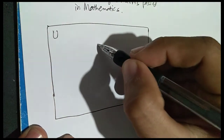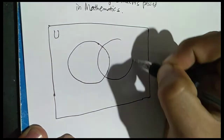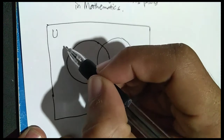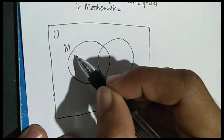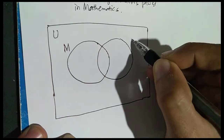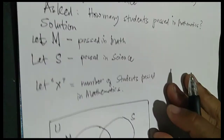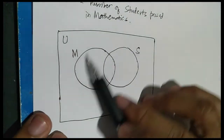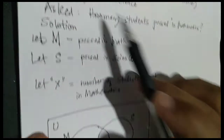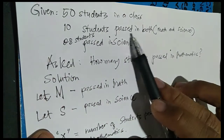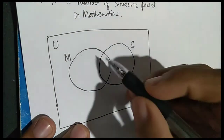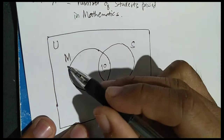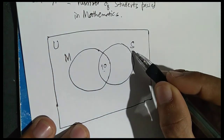Then draw two overlapping circles. The first circle is your M for mathematics, and the second circle is S for science. From the given, we have 50 students in the class. And there are 10 students who passed in both math and science, so we will be placing 10 in the overlapping area, because they passed in math and also in science.